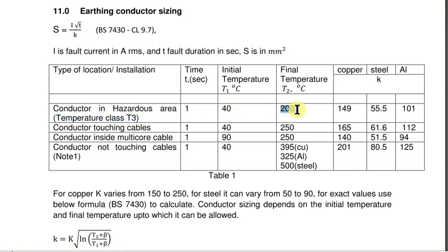If a conductor is touching other cables, the temperature has to be restricted to 250 degrees Celsius. The reason is an XLP cable outer sheath can withstand a temperature up to about 250 degrees Celsius before it can get deformed. Hence, we need to restrict the earthing conductor temperature to 250.